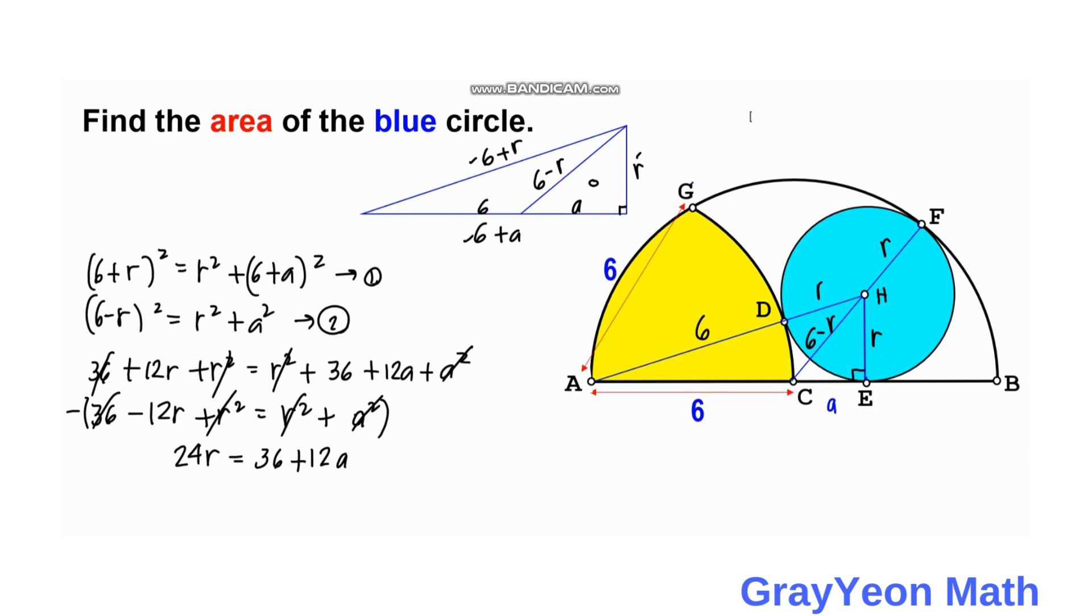And if we divide both sides by 12, or multiply this by 1 over 12, we have 2R is equal to 3 plus A, or we can also write A is equal to 2R minus 3.